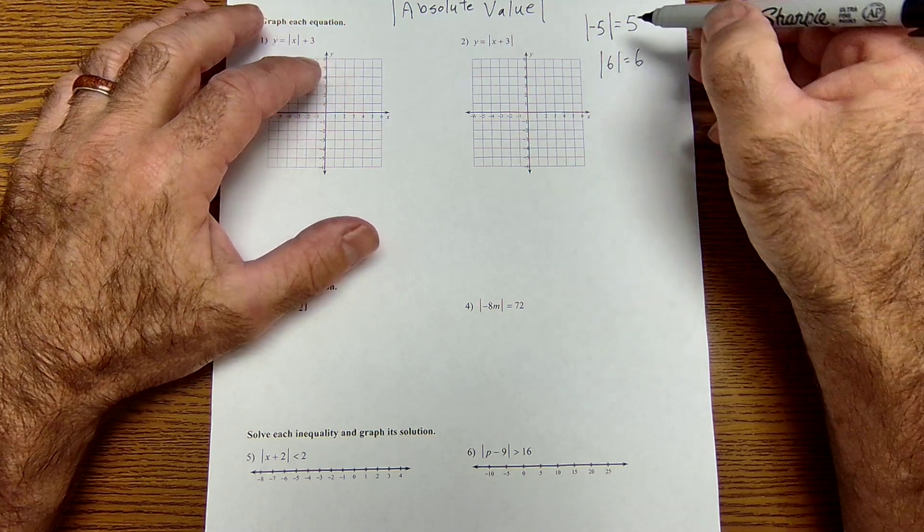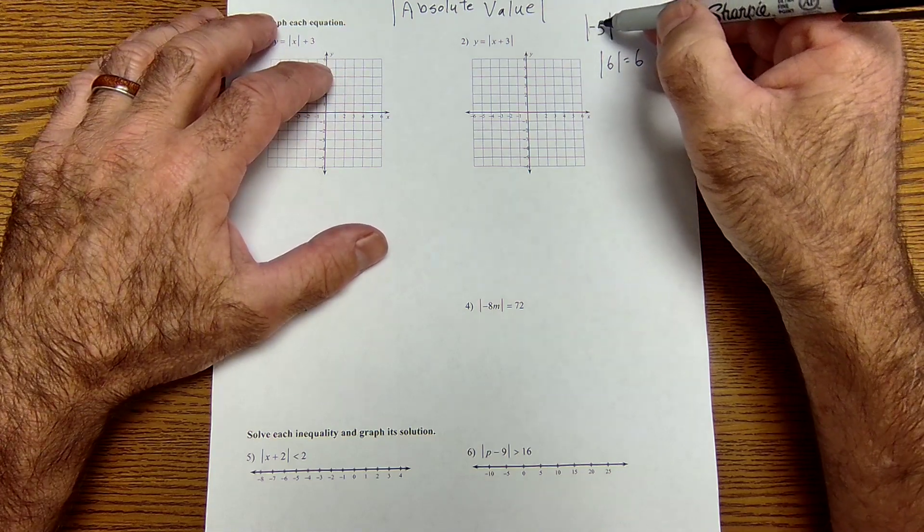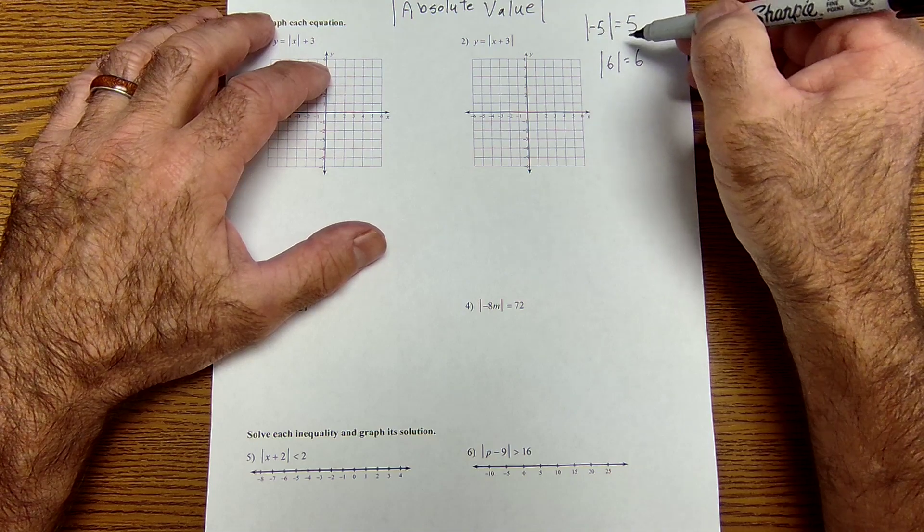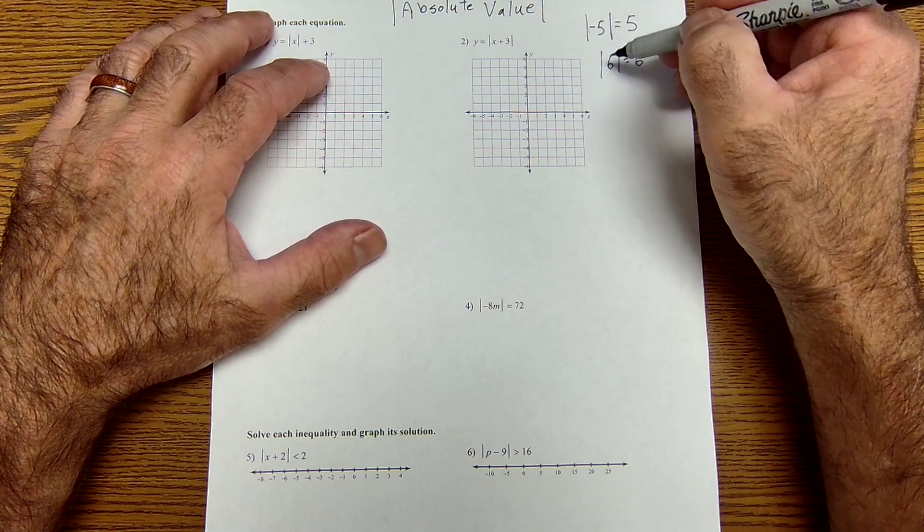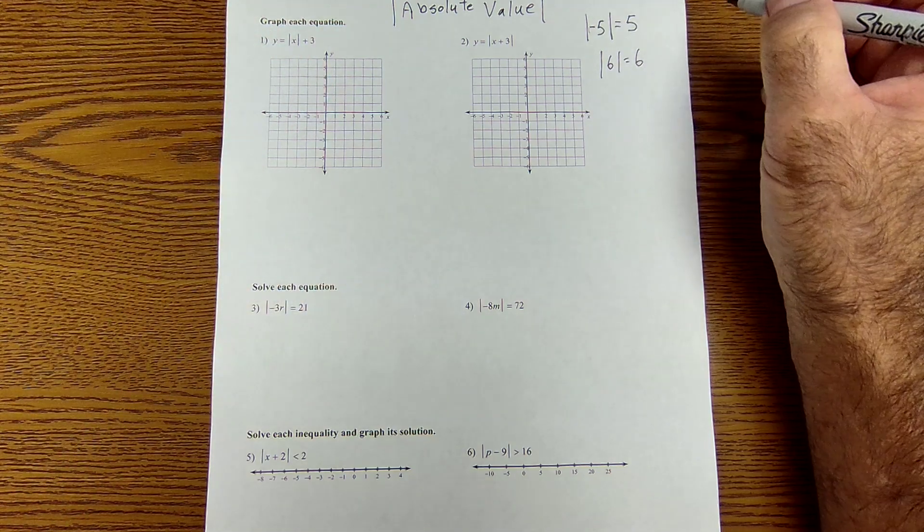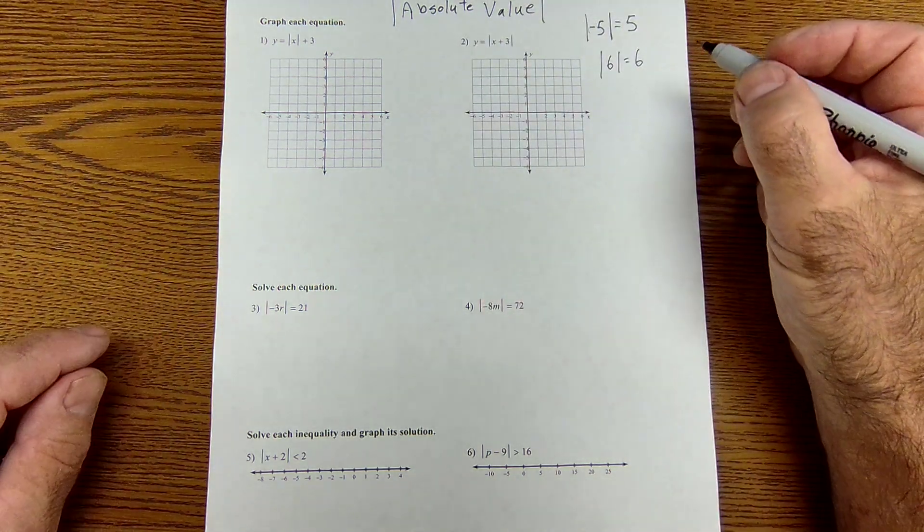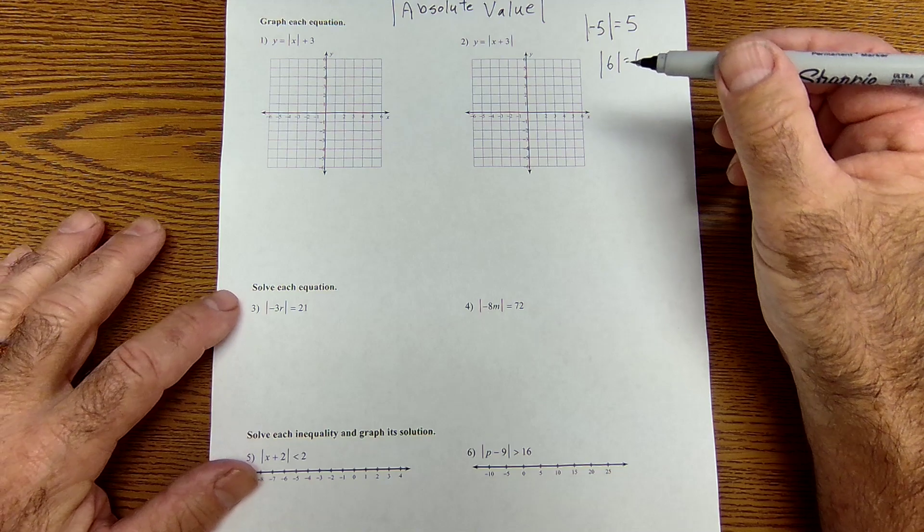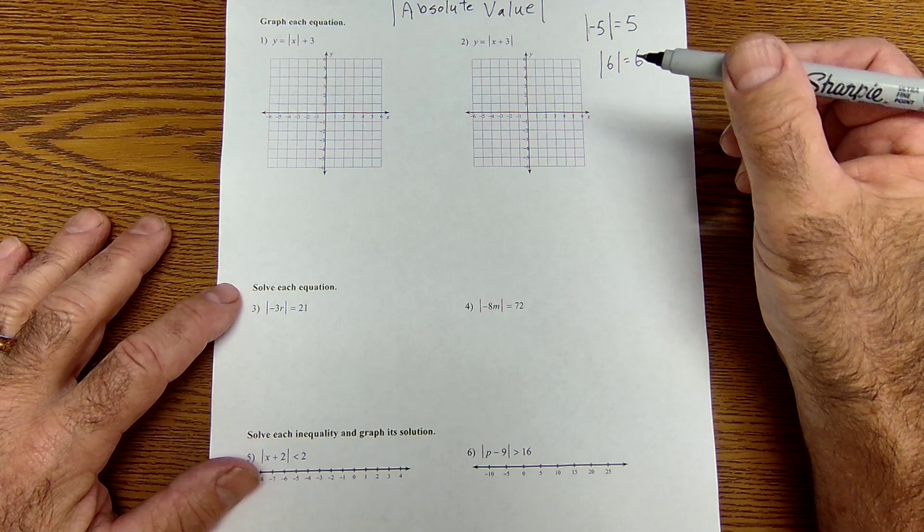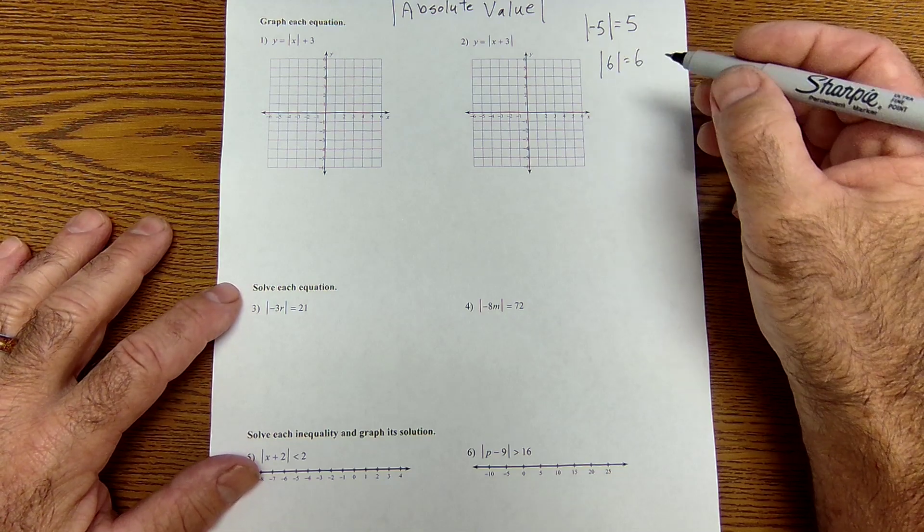You don't do anything. So what it means is everything inside that bar could either be positive or negative. But after you take the absolute value of it, it becomes positive. All right, let's get started with these problems here. I recommend you pause the video and try the problem before I do it.